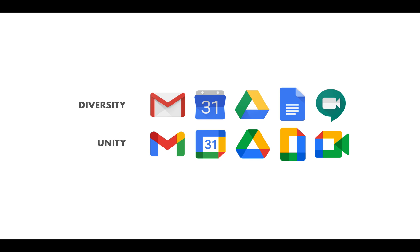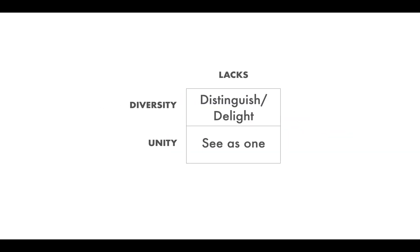Now it's important to understand what happens when you overemphasize diversity or unity. If you overemphasize unity and you lack diversity, what happens is that you lose the ability to distinguish between the icons and delight, because part of the delightfulness of a thing is its particularities — that's the thing that makes it itself. You're unable to delight the user, and you're unable to distinguish them. Everything starts running together and you don't see the differences.